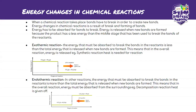There are two terms we need to know: exothermic and endothermic reactions. These are the two main types of reactions in this chapter. Under exothermic or endothermic, we can have combustion or decomposition reactions. For an exothermic reaction, the energy that must be absorbed to break the bonds in the reactants is less than the total energy released when new bonds are formed — meaning overall, energy is being released.